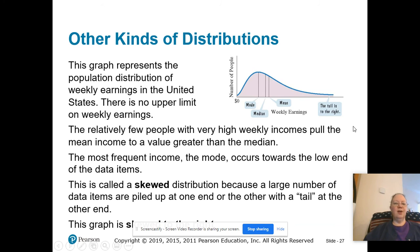There are other kinds of distributions. It doesn't have to be a normal distribution. A lot of distributions are normal, but they are not always. This graph represents the population distribution of weekly earnings in the United States. There is no upper limit on weekly earnings. Relatively few people with very high weekly incomes pull the mean income to a value greater than the median.